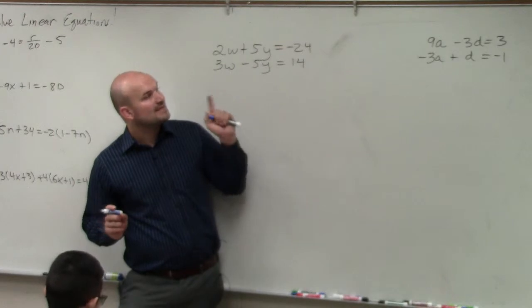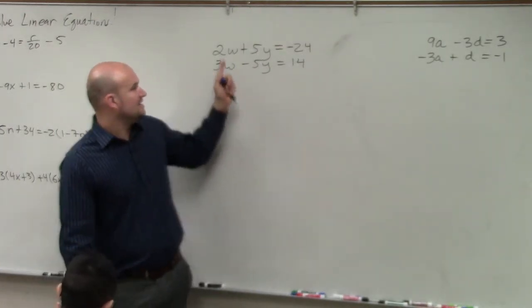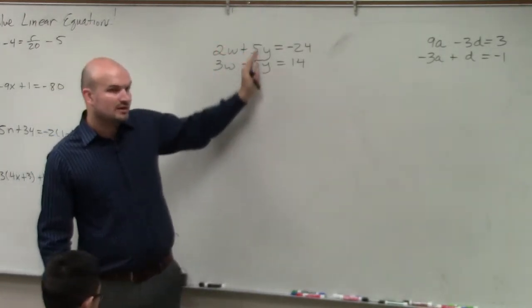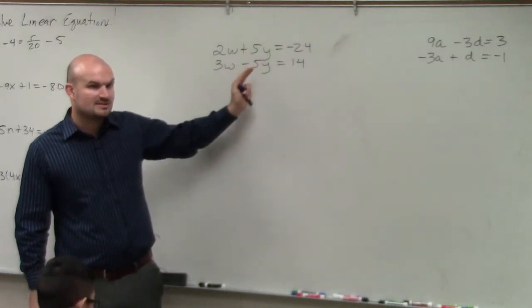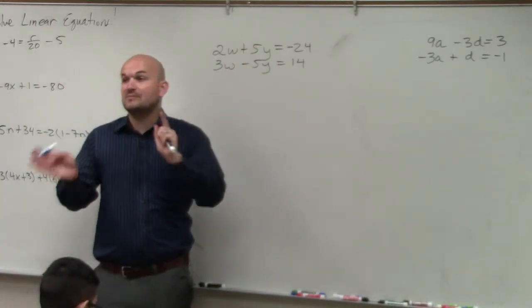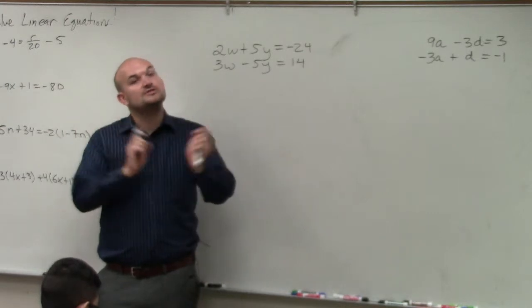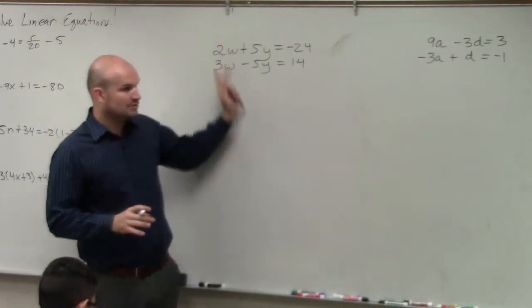Step number one is to make sure that your variables are aligned. So do you guys see how the w's are over the w's, and the y's are over the y's? Just in case, you might have problems where variables are flip-flopped. So you're going to want to rewrite the equation so they are aligned.